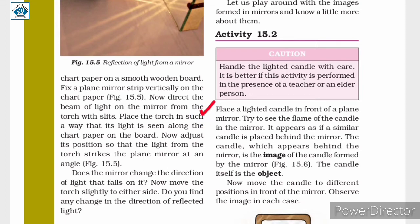Place a lighted candle in front of a plane mirror and try to see the flame in the mirror. It appears as if a similar candle is placed behind the mirror. The candle which appears behind the mirror is the image formed by the mirror, as shown in figure 15.6. The candle itself is the object.